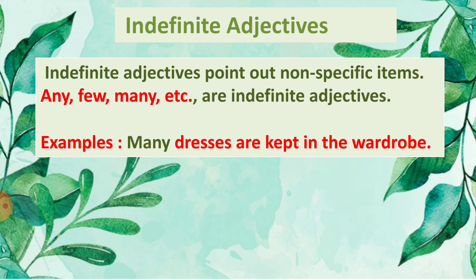The next type is indefinite adjectives. Indefinite adjectives point out non-specific items whose quantity is not known. Any, few, many, etc. are indefinite adjectives. For example, 'Many dresses are kept in the wardrobe' — here 'many' shows there are a number of dresses but the exact quantity is not known. Notice that 'many' is also followed by a noun, 'dresses.'